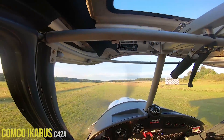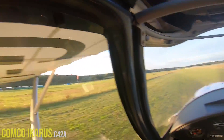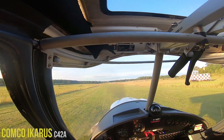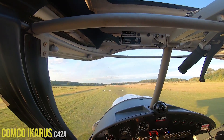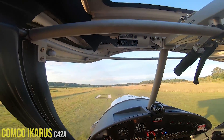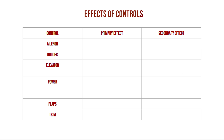Now let's look through the controls we have on the Icarus C-42. We're going to look through their primary effects and their secondary effects. As we already discussed, the ailerons are used to roll the aircraft.